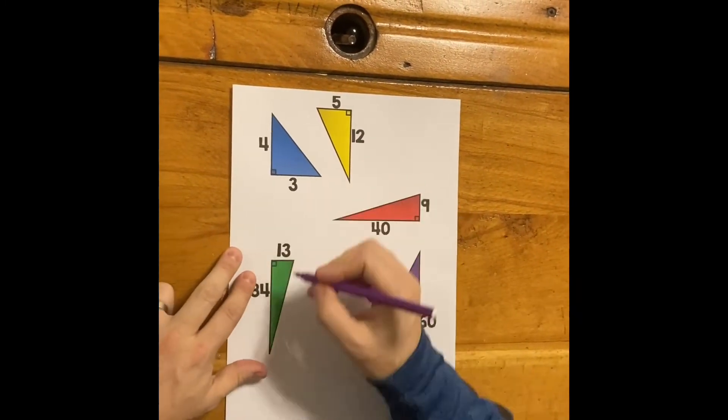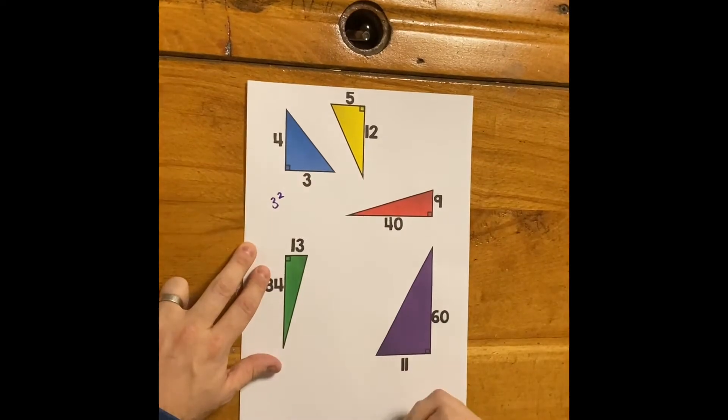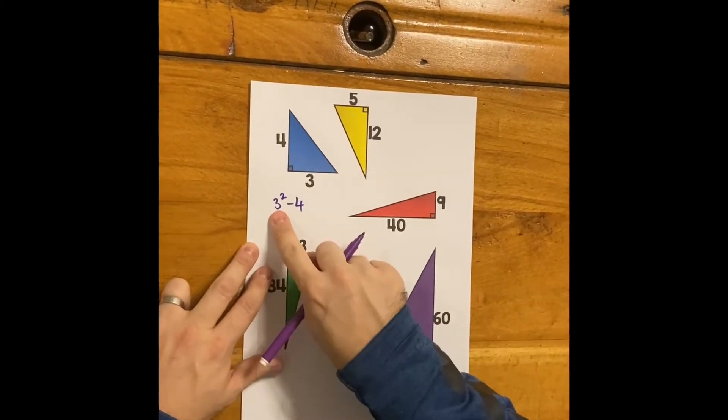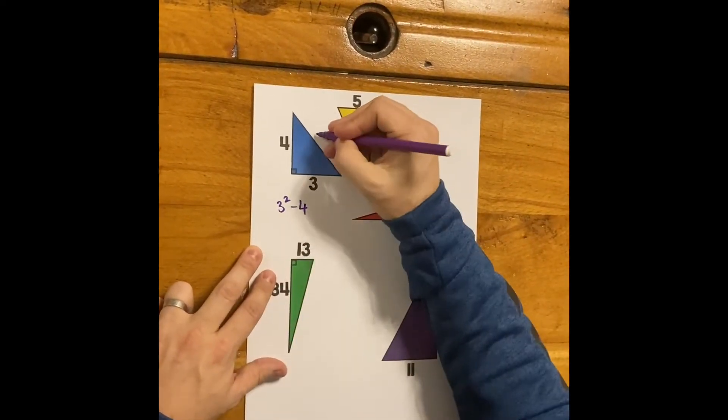But if you're looking for the hypotenuse, just take the smallest side, for example 3, square it, take away the other side. 3 squared, 9, take away 4, it's 5. Boom.